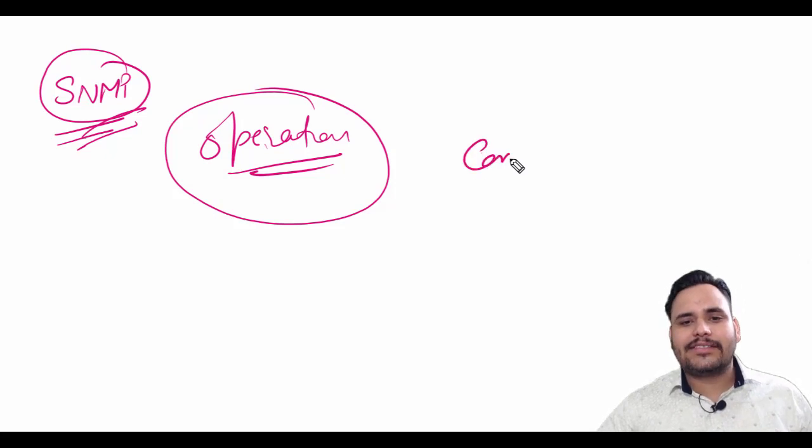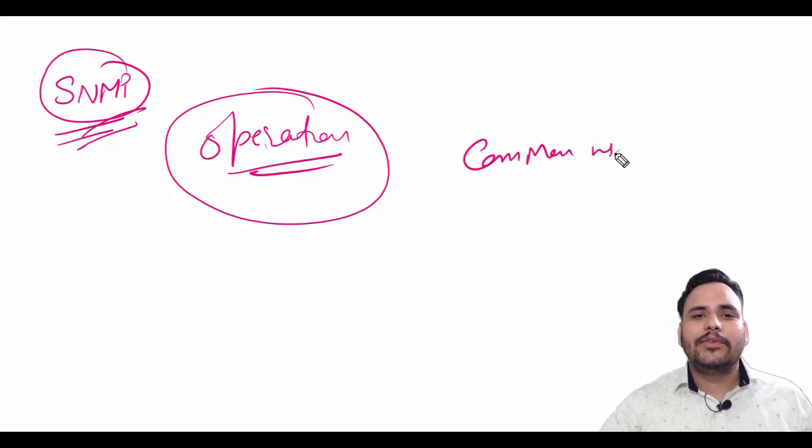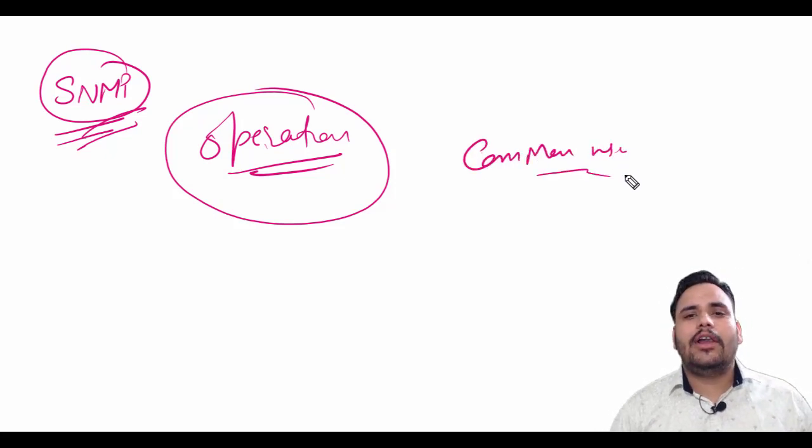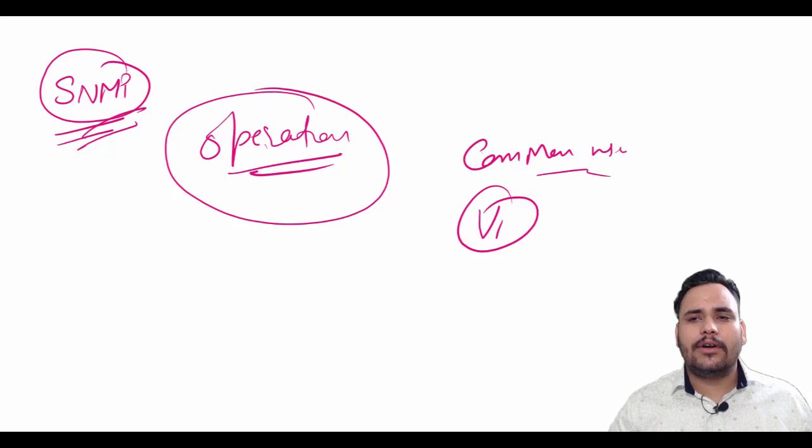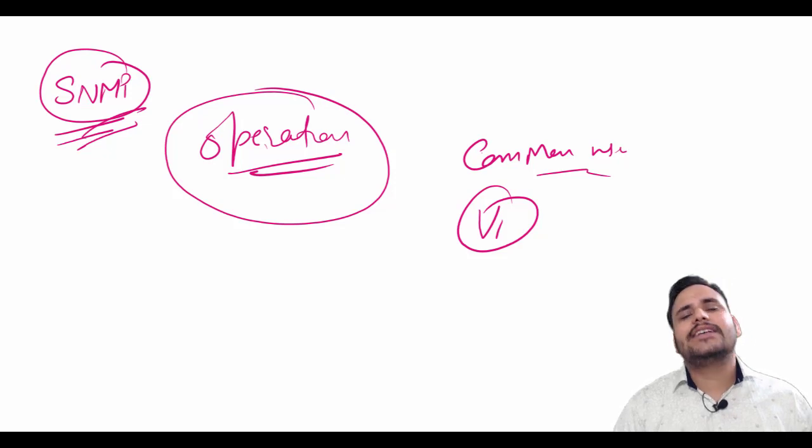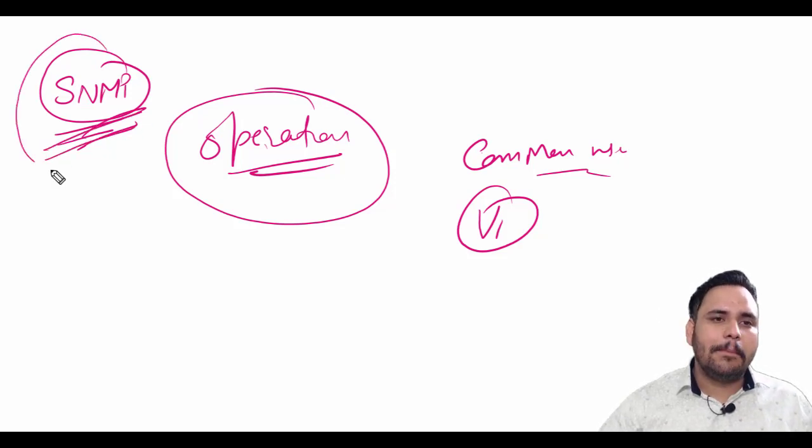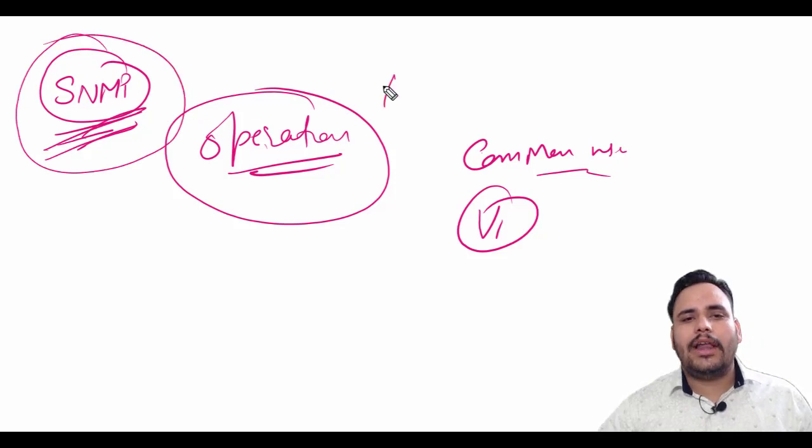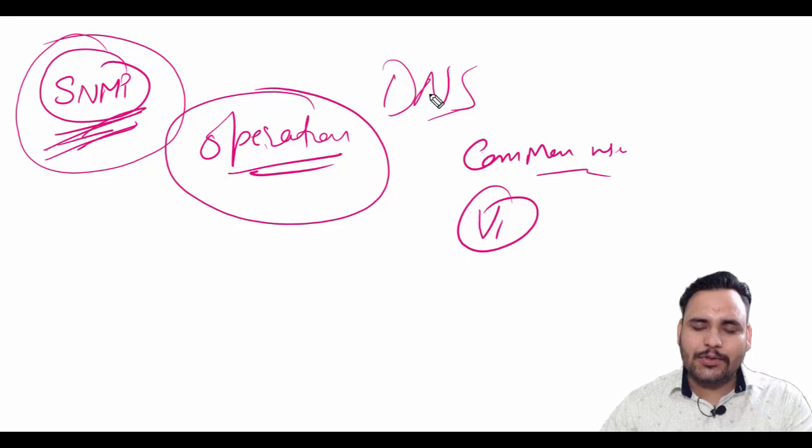Later versions of the protocol have addressed numerous issues in SNMP v1. Those issues have almost entirely been directed at fixing the security models. So SNMP is Simple Network Management Protocol and DNS is Domain Name Server. Thank you so much.